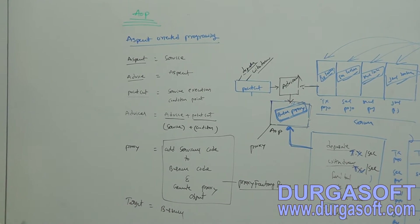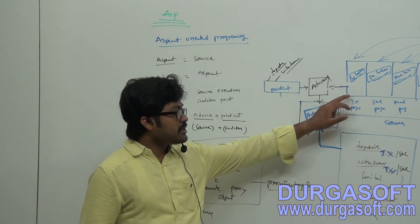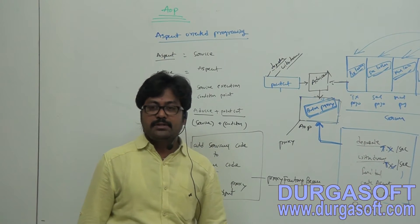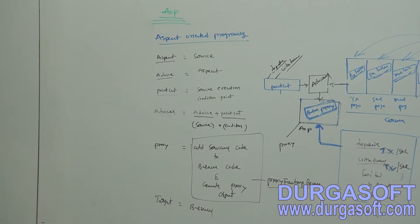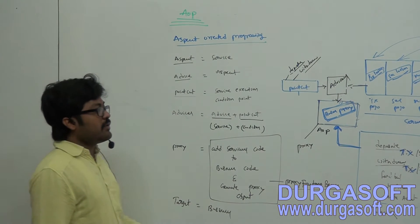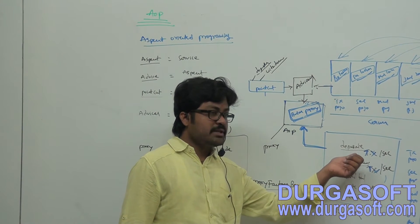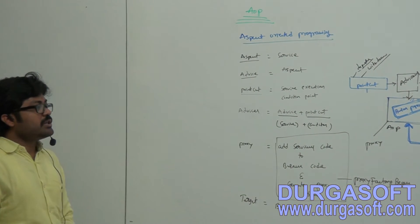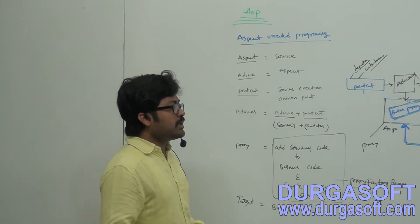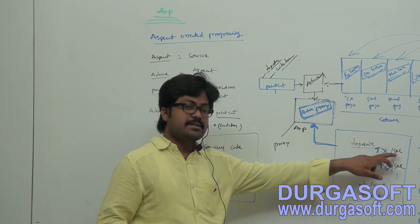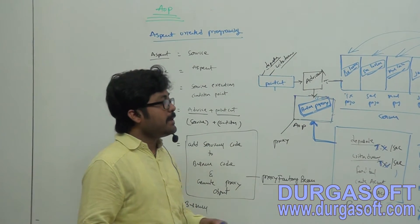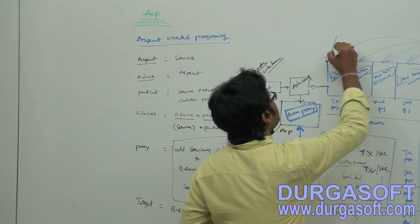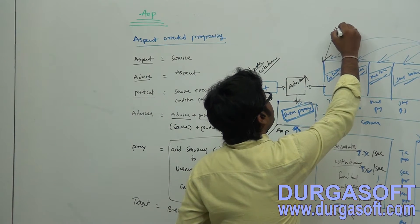Your aspects may need to execute along with your business, before business, or after business — it depends on your use case and your service. Before your business code or after your business code it needs to execute. So on the required condition, if you want to execute transactions and security, if you want to execute a service before your business, you need to implement that service from the advice class method before advice.